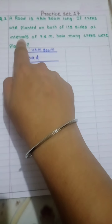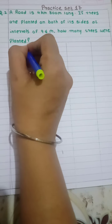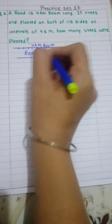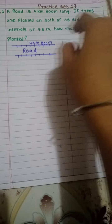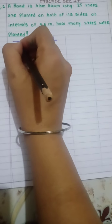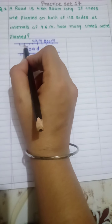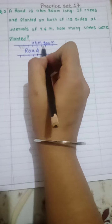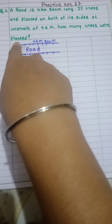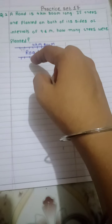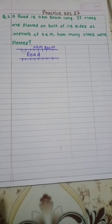Intervals means the gap. So trees are planted like this on one side, and on this side also trees are planted. The interval is 9.6 meter — from here to here is 9.6 meter, and from here to here also 9.6. So the gap between two trees is 9.6 meter. They are asking how many trees are planted on this side and this side — the distance of the road is given, the interval between the trees is given, and we have to find out the number of trees.